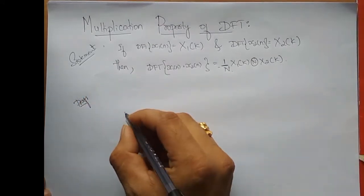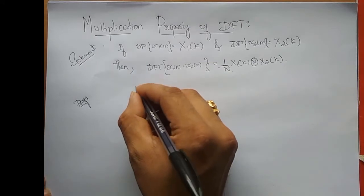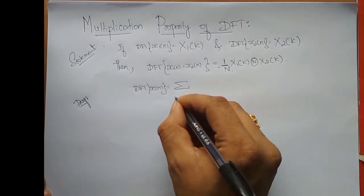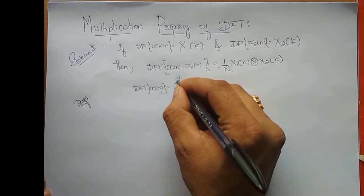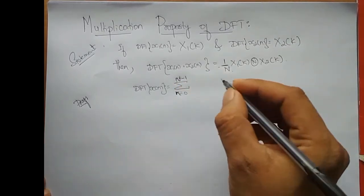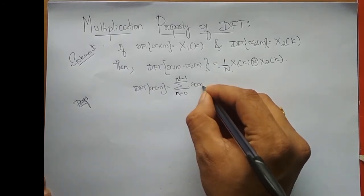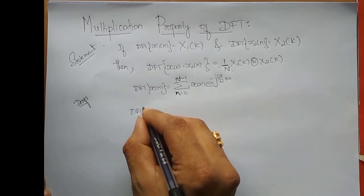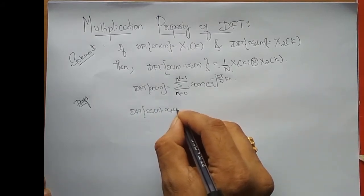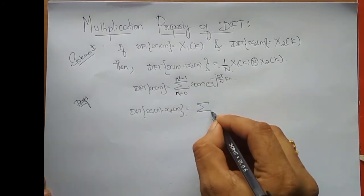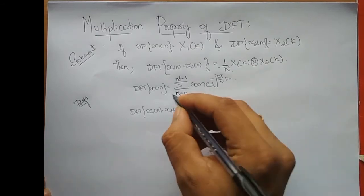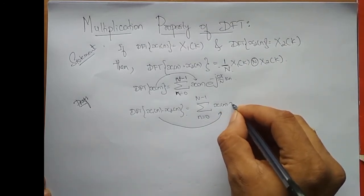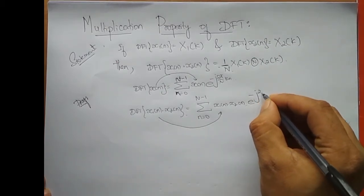So we will try to prove it. From the definition of DFT, DFT of x(n) is summation n varying from 0 to N minus 1 of x(n) · e^(−j2π/N · kn). So what is DFT of x1(n) · x2(n)? It is equal to summation n varying from 0 to N minus 1 of x1(n) · x2(n) · e^(−j2π/N · kn).